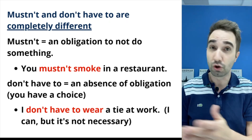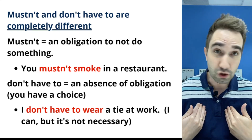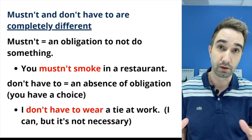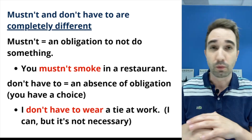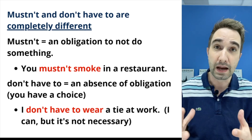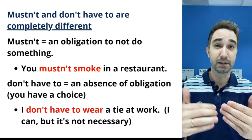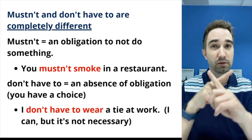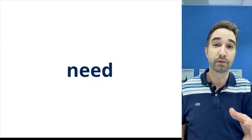Don't have to just means there's no obligation. For example, I'm wearing a polo shirt — I don't have to wear a tie at work. I can wear a tie, but it's not necessary; it's not my obligation. In Singapore we have to wear a mask — we have no choice. But don't have to means it's my choice; it's not necessary.